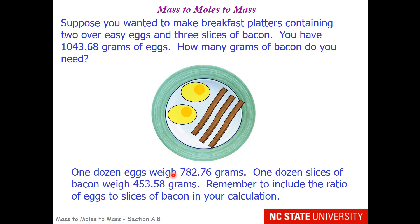One dozen eggs weigh 782.76 grams. That's sort of like the molar mass from the periodic table. It gives you a group and the mass of that group. You're also told that one dozen slices of bacon weigh 453.58 grams. Again, kind of like a periodic table. The last thing is the suggestion that you remember to include the ratio of eggs to slices of bacon in your calculation. It's not one to one. You need two eggs for every three slices of bacon.